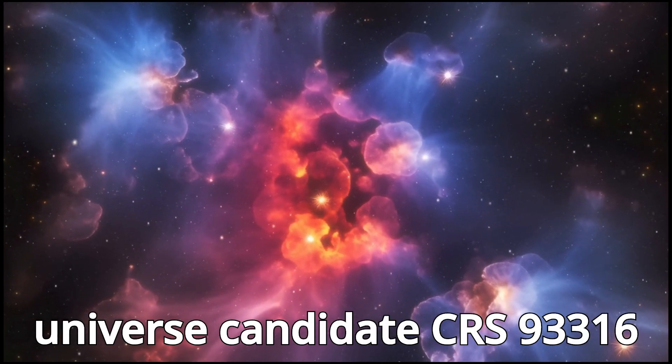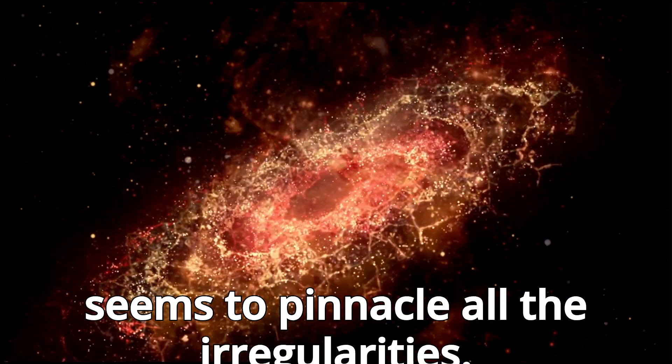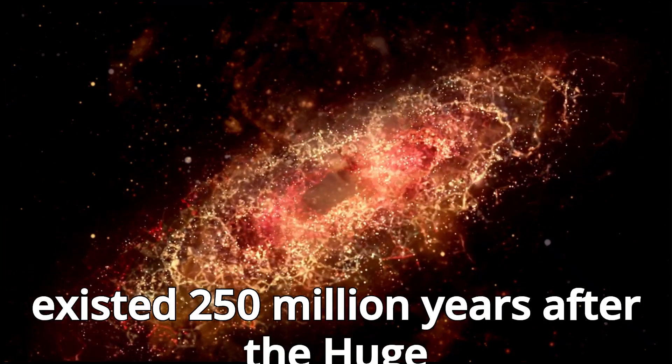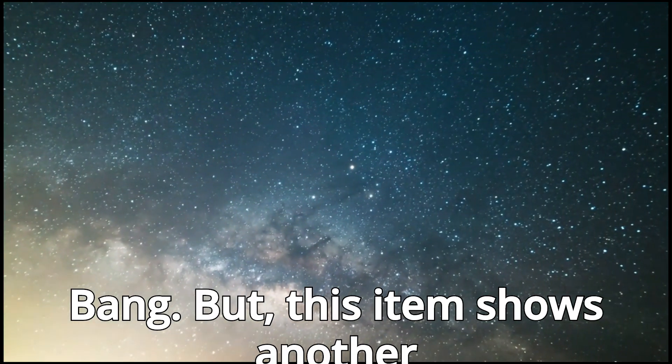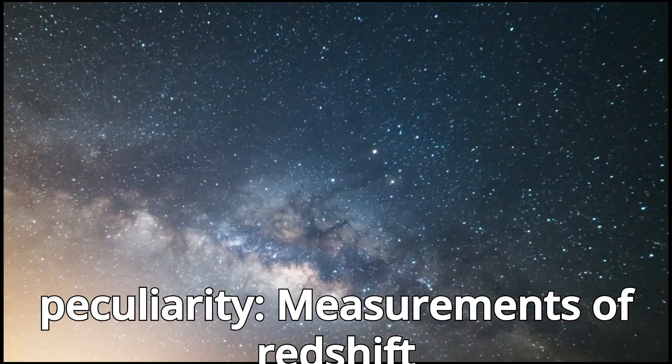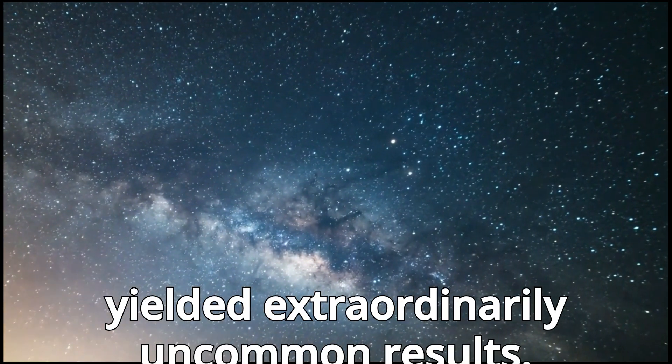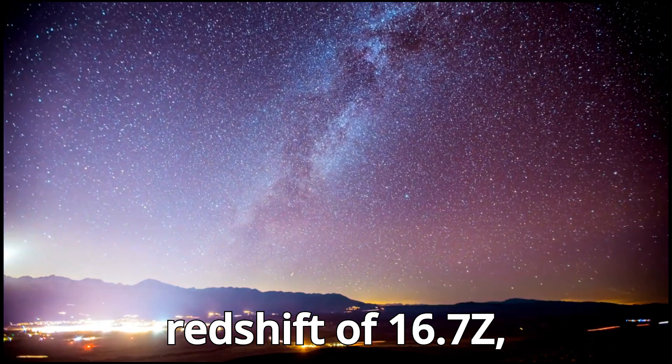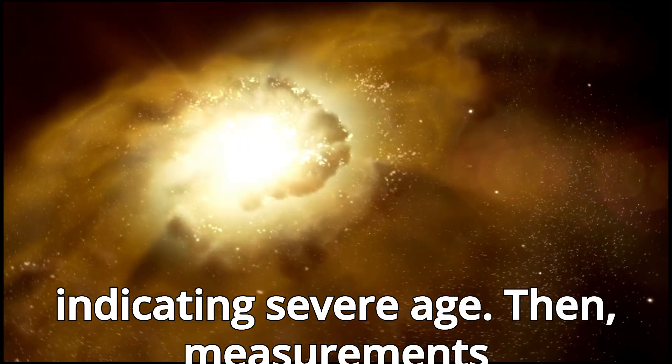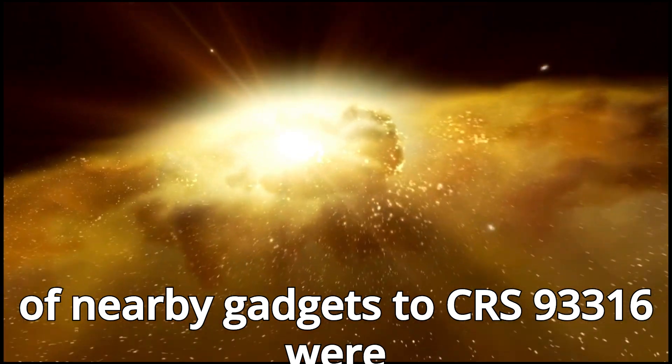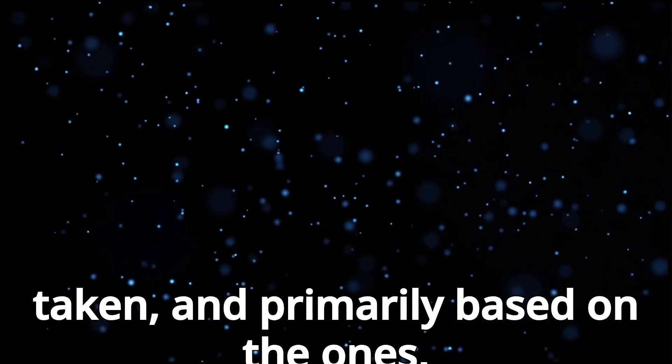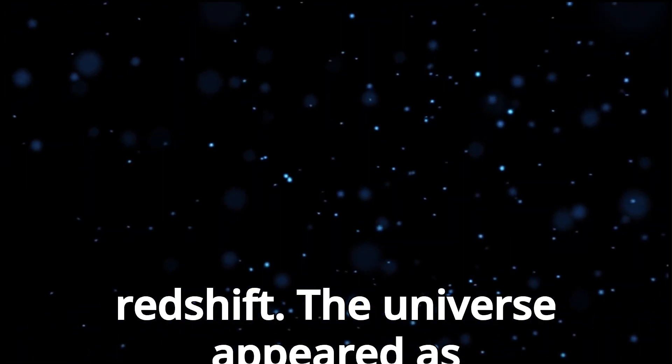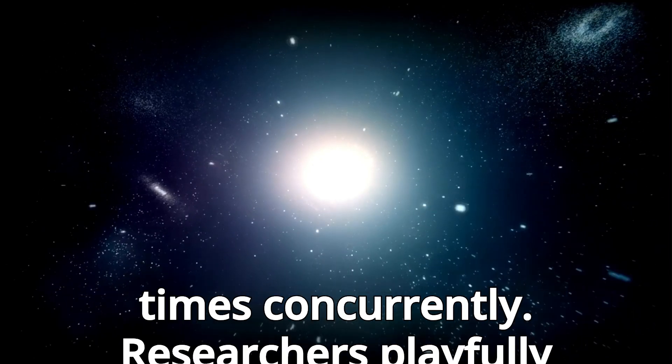The galaxy candidate CRS-93316 seems to top all the irregularities. This object is so old that it already existed 250 million years after the Big Bang. But this item shows another peculiarity. Measurements of redshift yielded extraordinarily uncommon results. At one point, the object showed a redshift of 16.7 Z, indicating extreme age. Then, measurements of nearby objects to CRS-93316 were taken, and based on those, the galaxy showed an entirely different redshift.